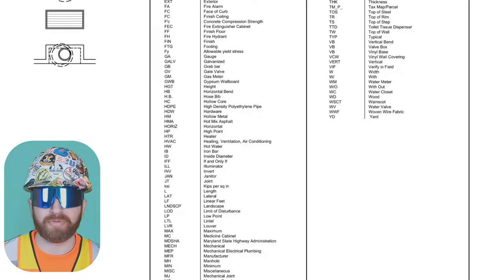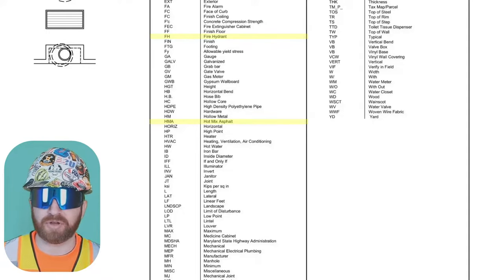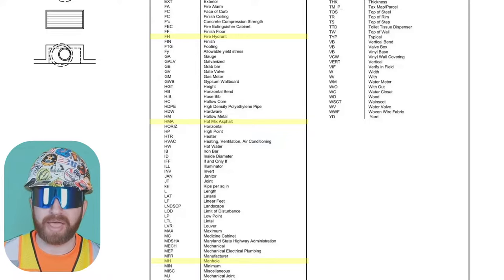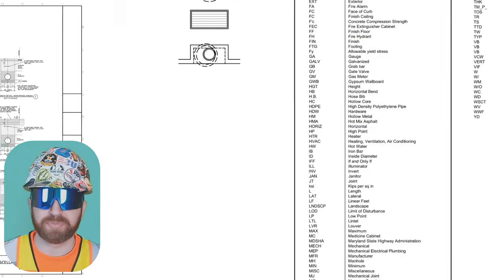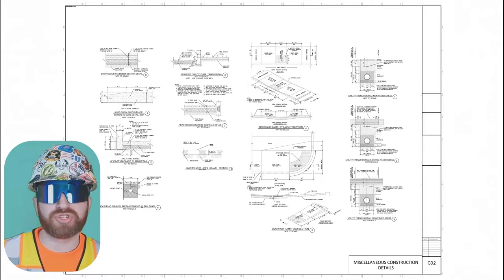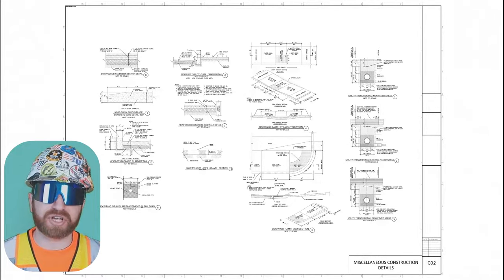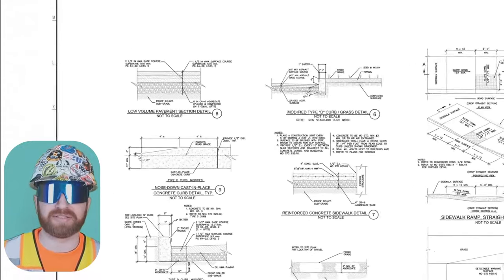Take your time and go through all the symbols and abbreviations — commit them to memory because it'll save you a tremendous amount of time when flipping through these drawings. For example: FH means fire hydrant, HMA means hot mix asphalt, and MH means manhole. Moving on to C0.2, miscellaneous construction details — this shows us enlarged details of aspects of the project we're going to find later in this civil set of plans.